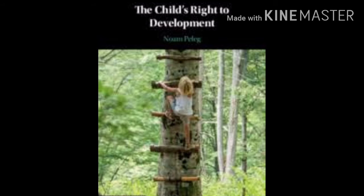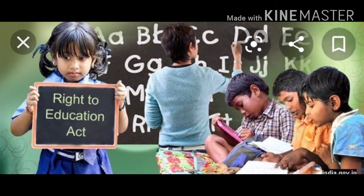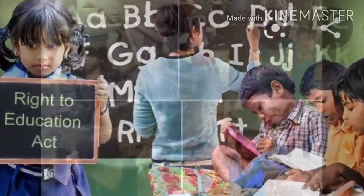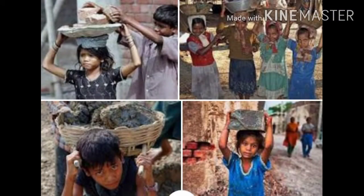Right to development means every child has the right to go to school and develop life skills. No one can stop you from getting admission in a government school. All children below 14 years have the right to go to school, and the government is responsible to provide free education to all. It is illegal to force children below the age of 14 to work — this is called child labor.